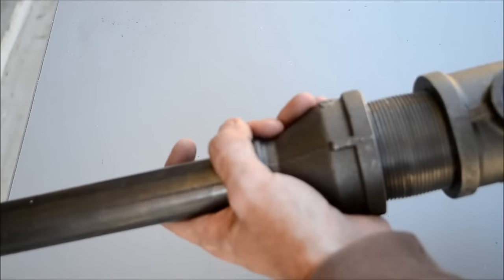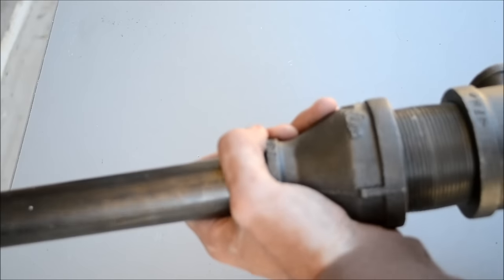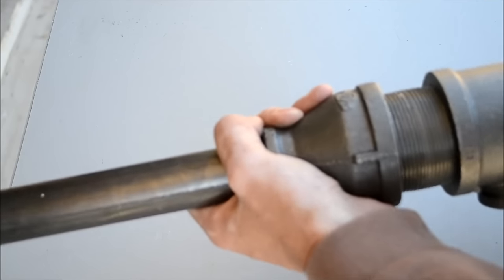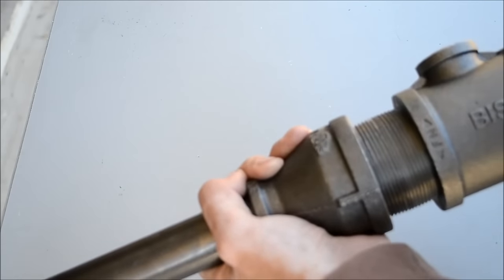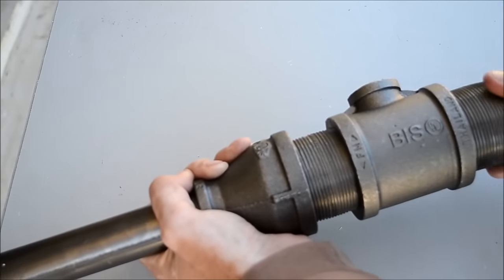Then attach the 2 inch to 3 quarter inch T black iron pipe fitting to the nipple, and then after that, the other 2 inch nipple.